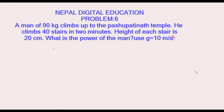Let us look at problem six. A man of 90 kg climbs up to the Pashupatinath temple. He climbs 40 stairs in two minutes. The height of each stair is 20 centimeters. In this problem we have to find the power of the man.